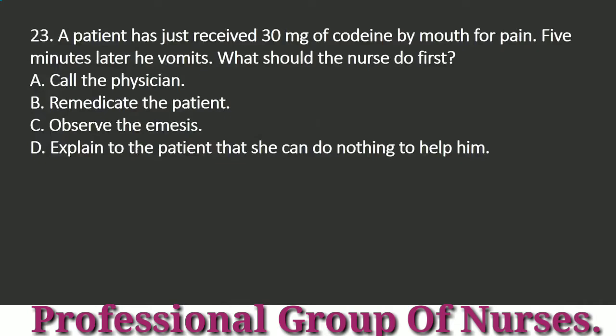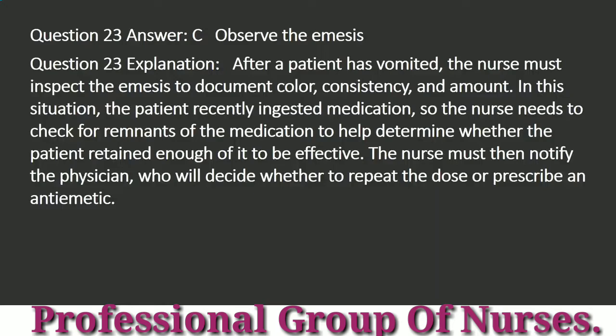Question 23: A patient has just received 30 mg of codeine by mouth for pain. Five minutes later he vomits. What should the nurse do first? a. Call the physician. b. Remedicate the patient. c. Observe the emesis. d. Explain to the patient that she can do nothing to help him. Answer: c. Observe the emesis. Explanation: After a patient has vomited, the nurse must inspect the emesis to document color, consistency, and amount. In this situation, the patient recently ingested medication, so the nurse needs to check for remnants of the medication to help determine whether the patient retained enough of it to be effective. The nurse must then notify the physician, who will decide whether to repeat the dose or prescribe an anti-emetic.